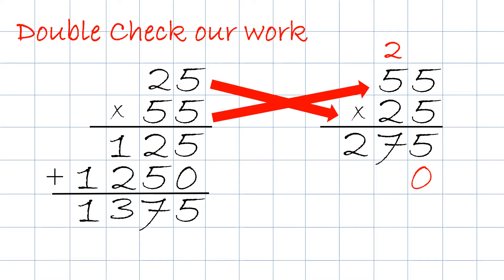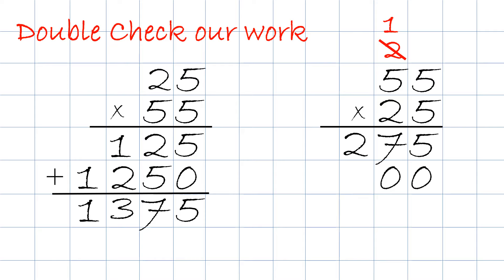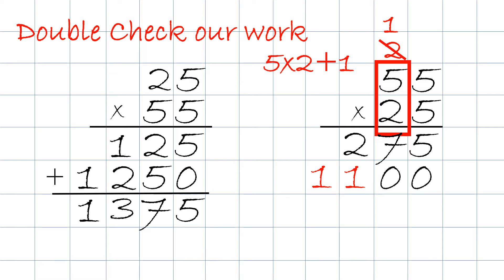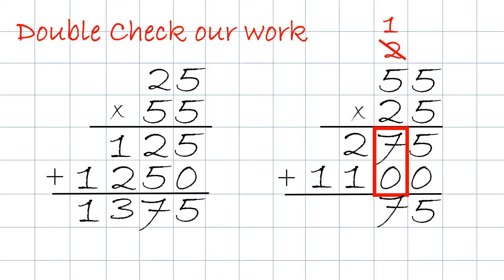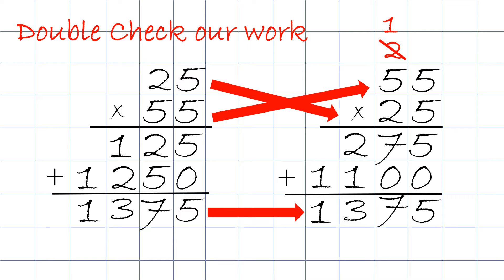Always remember to put the little 0 right up here for the second row. Next we take 2 times 5 which will be 10 — we only put the second digit, 0, and the 1 we carry on top, crossing out the previous 2. Then we take 5 times 2 plus the little 1 on top, which will be 11, and we put both digits 11 right up here. Last but not least we add them up starting from the right column: 5 plus 0 is 5, 7 plus 0 is 7, 2 plus 1 is 3, and 0 plus 1 is 1. The answers match — both sets give 1,375.